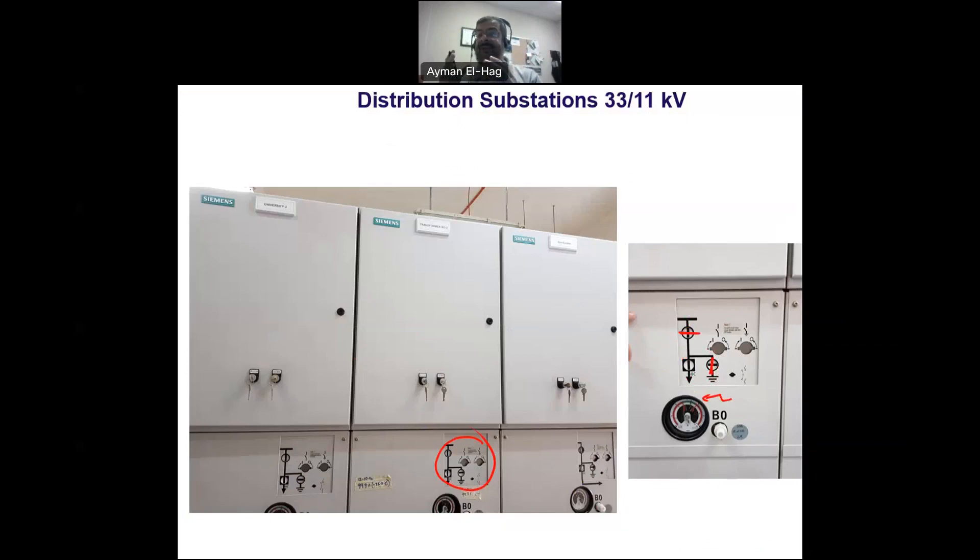Here is a gauge for the SF6 pressure. If there is any leak, it will go to a low level, which is not good because this will reduce the insulating property of the SF6. If there is a fault inside, the pressure will go to a high level. Between these two red lines is the green zone, which is the allowed pressure of the SF6.